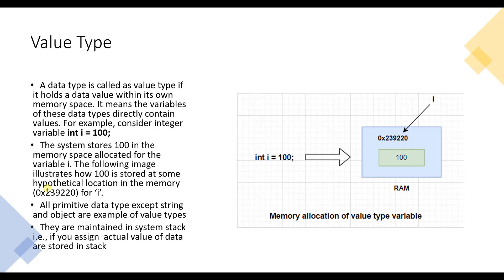Now we have value types. A data type is called a value type if it holds a data value within its own memory space — meaning the variable directly contains the value. For example, consider a variable int i with value 100. Here, integer i has a memory allocation in RAM at address 0x239220, and at that memory location we have stored the value 100. All primitive data types except string and object are examples of value types, and value types are always maintained in the system stack.